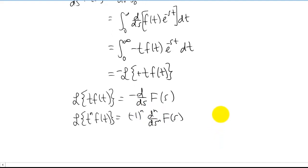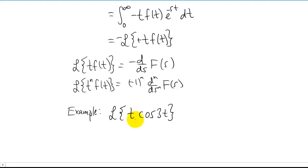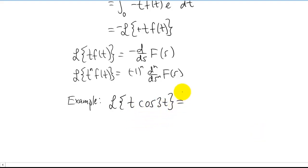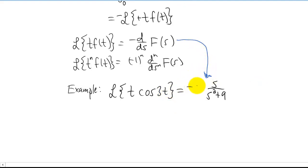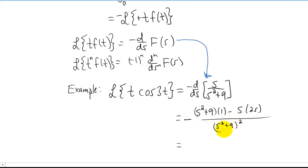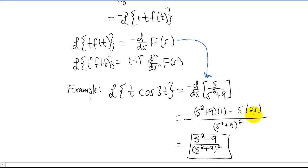Let's look at an example. Let's find the Laplace transform of t times cosine of 3t. Since cosine of 3t is multiplied by t, we take the Laplace transform of cosine of 3t — which is s over (s² + 9) — and then take a negative derivative with respect to s using the quotient rule. After simplifying, we get our result, and we distribute the negative sign through the numerator.